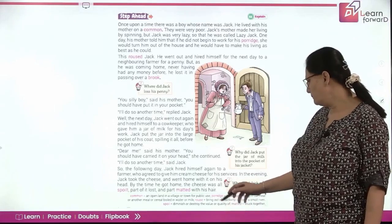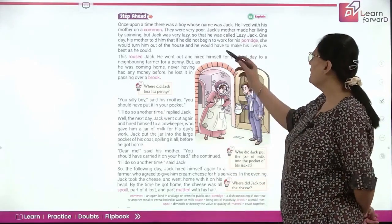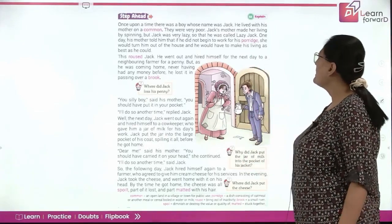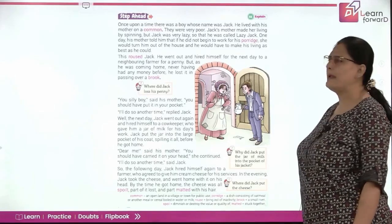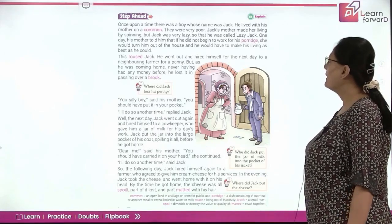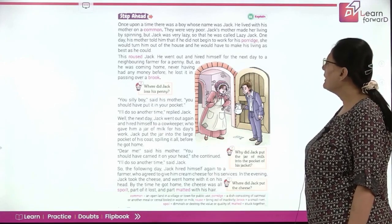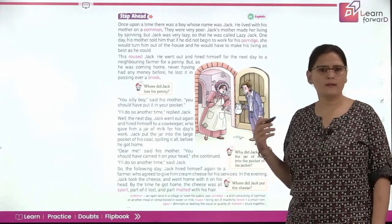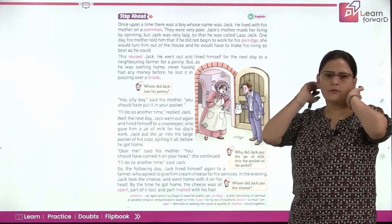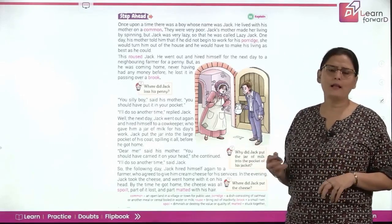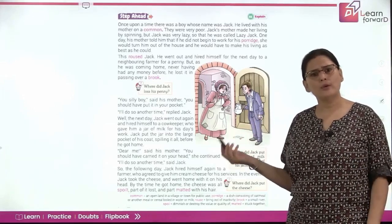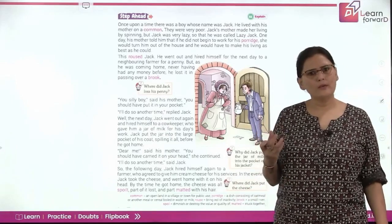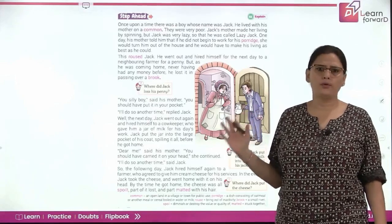They were very poor — that is the reason they were living on land that was for the public; they did not have their own personalized home. Jack's mother made her living by spinning. But Jack was very lazy, so he was called Lazy Jack. One day his mother told him that if he did not begin to work for his porridge, she would turn him out of the house and he would have to make his living as best as he could. Porridge refers to a dish consisting of oatmeal — like daliya. She said she was not going to help him further if he didn't start working right now.